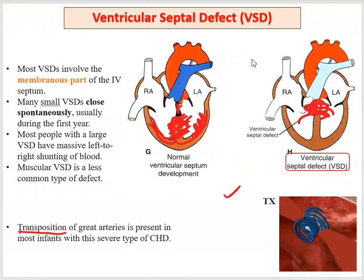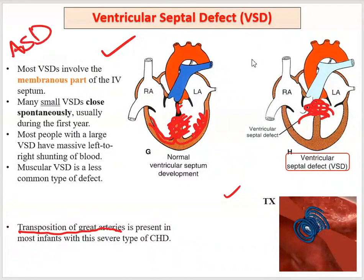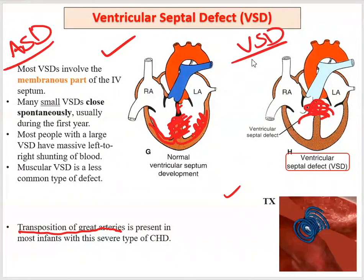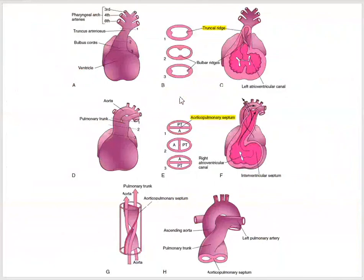This is about ventricular septal defect. In hospitals, they use the abbreviations — ASD for atrial septal defect, VSD for ventricular septal defect. Now let me shift to another defect involving the heart tube. Let me remind you of the heart tube, which had five dilations: truncus arteriosus, bulbus cordis, ventricles, atria, and sinus venosus.